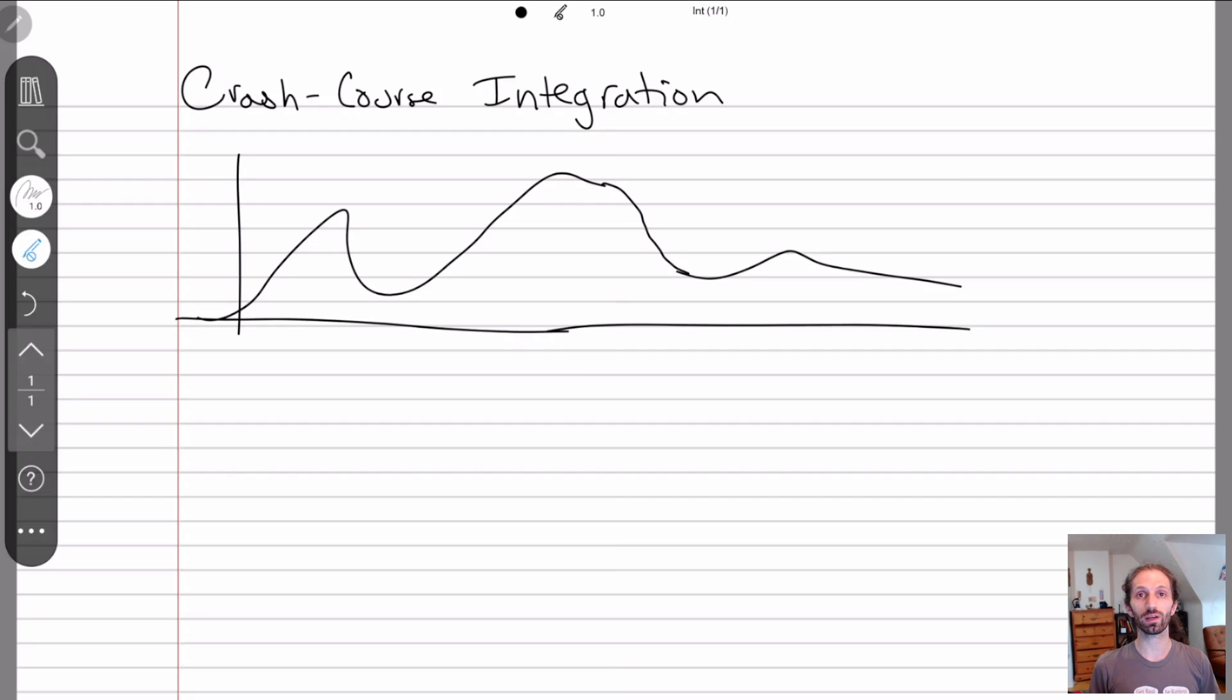Originally what we kind of do is we say okay if we have the area under the curve we can estimate it by looking at little rectangles under the curve. And if you recall these are called Riemann sums. So you just take the summation of your function times some change. So this is your height, this is your width, and this is your sum.